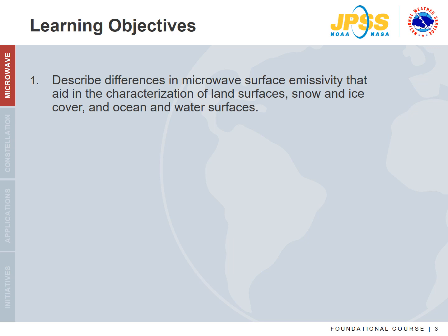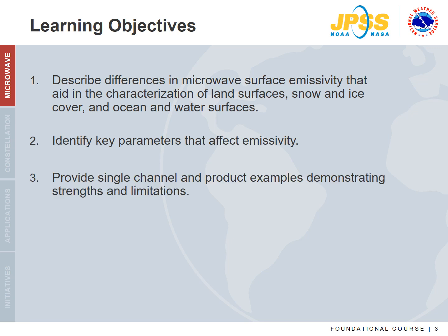The learning objectives are: one, to describe differences in microwave surface emissivity that aid in the characterization of land surfaces, snow and ice cover, and ocean and water surfaces. Two, to identify key parameters that affect emissivity. And three, to provide single channel imagery and product examples for comparison and to demonstrate strengths and limitations.